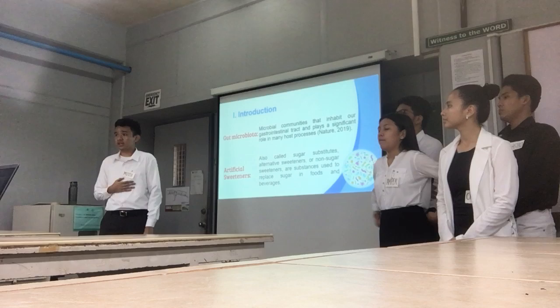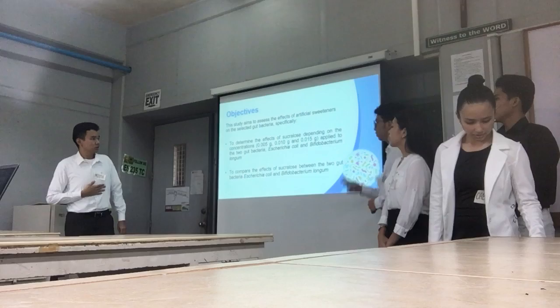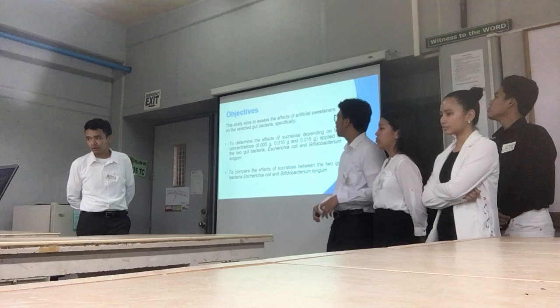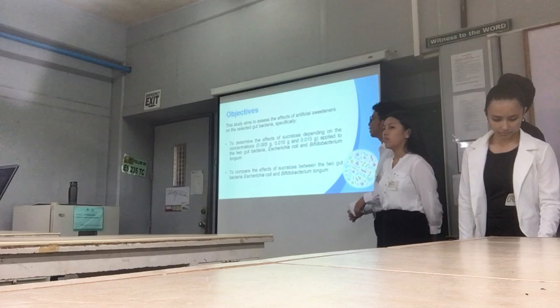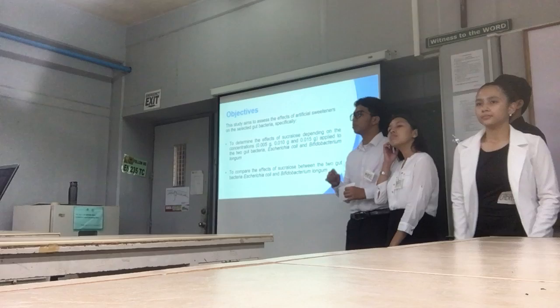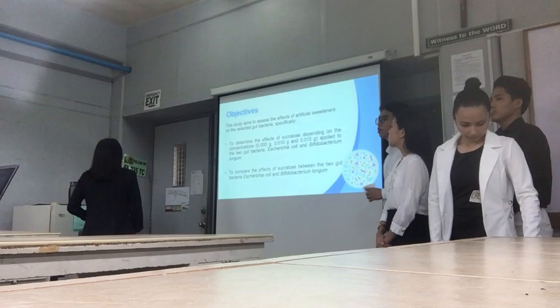The goal of this study is to assess the effects of artificial sweeteners on the gut bacteria, namely Escherichia coli and Bifidobacterium. There are two specific objectives. The first is to determine the effects of sucralose at given concentrations — 0.005, 0.010, and 0.015 grams — applied to the two gut bacteria, Escherichia coli and Bifidobacterium, using in vitro methods.